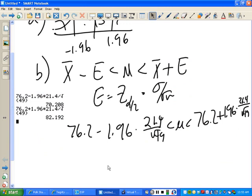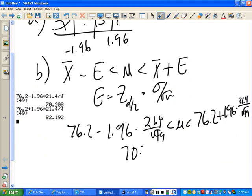So, we got 70.21 and 82.19. This is part C, yes? Part D says what?